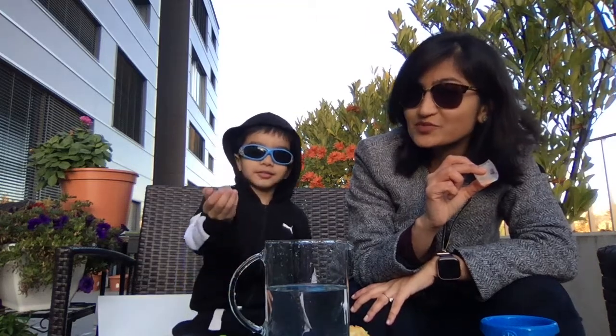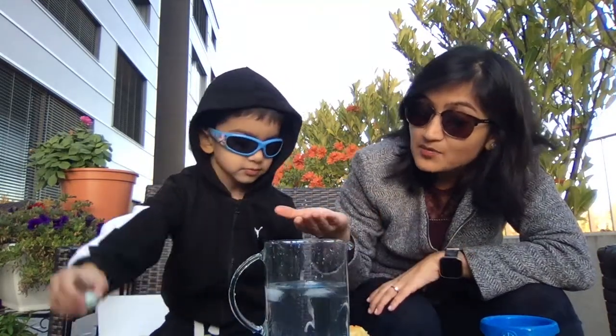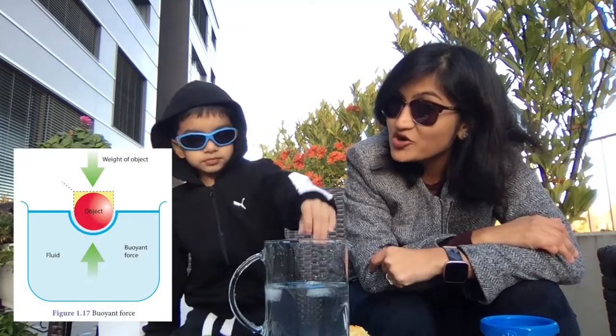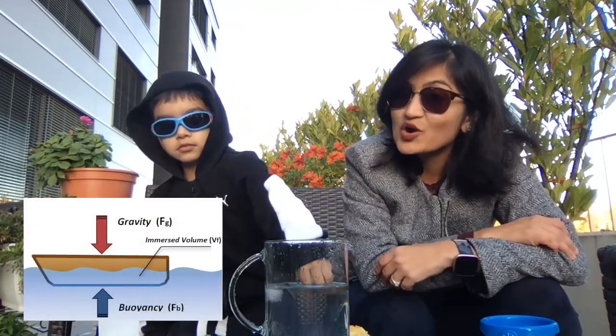To explain buoyancy a bit more, let's see what happens when we put an ice cube in this water. Do you see? The ice cube is floating. The ice cube displaces, or moves, some of the water to make way for itself. The water level rises and the ice floats partially in and out of the water. Some part of the ice is above and some part is below. Gravity is trying to pull the ice cube down and the buoyant force is pushing it up. How far in or out the ice cube stays depends on its density.